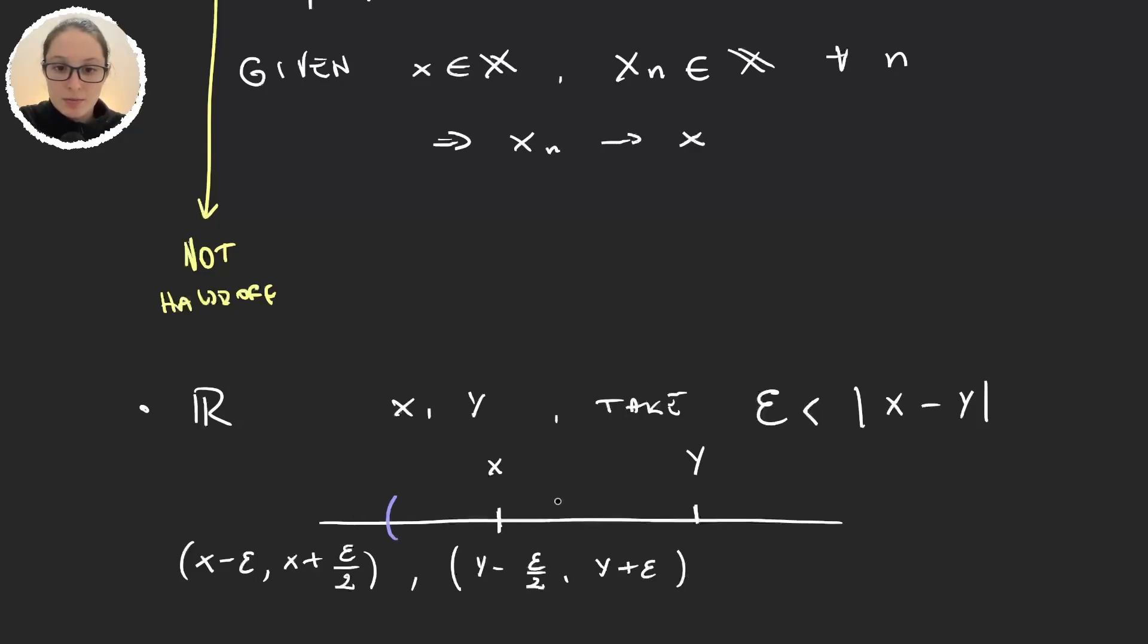These two sets are sort of like this: y plus epsilon, y minus epsilon over 2. So these are two neighborhoods of x and y that are disjoint. And because they are open sets then they are obviously in the standard topology of the real line.